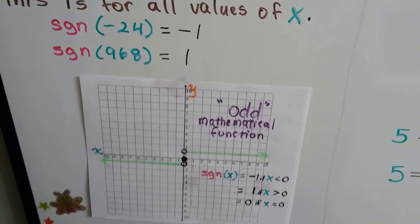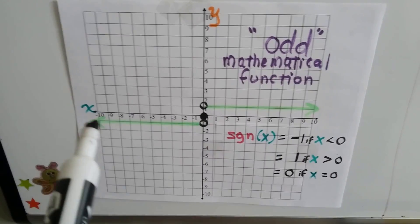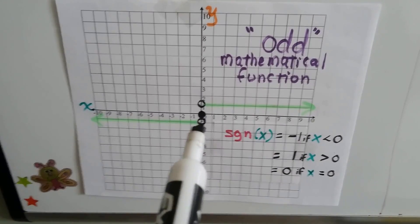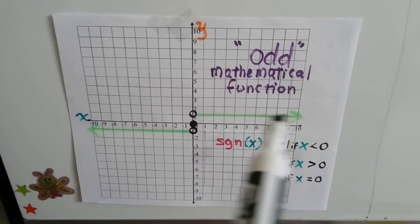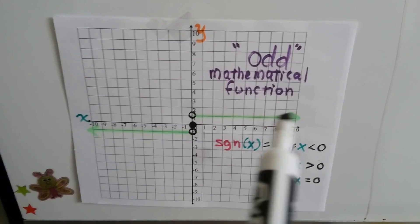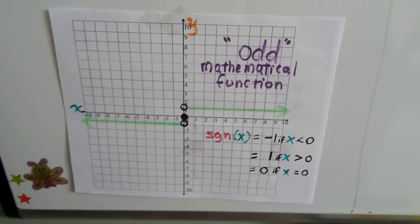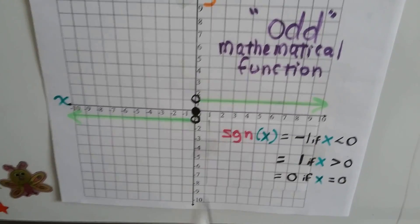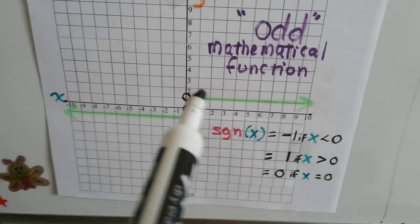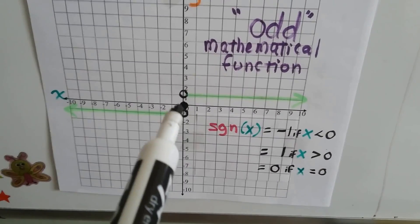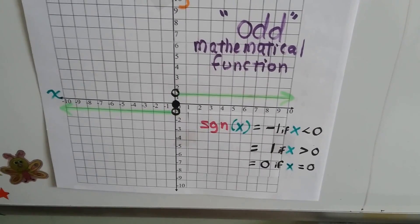When we graph the signum function, we end up with two rays — one heading off to the left at a height of negative one on the y-axis, and one heading off to the right at a height of positive one on the y-axis, or zero at the origin. There are open circles (not included) at negative one and positive one, but a filled-in dot showing zero is included.